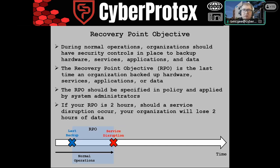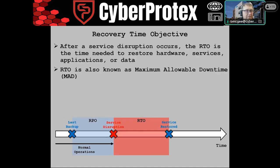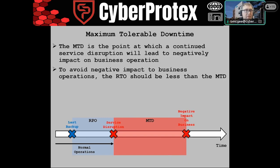Just as a review — we covered this earlier in risk management — the recovery point objective is the last time the organization backed up the hardware, services, and applications. Recovery time objective is the time needed to restore those services. And then the maximum tolerable downtime is the point at which the continued disruption leads to negative impact.